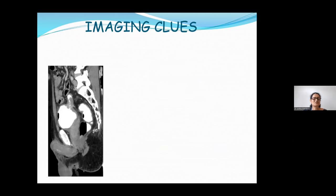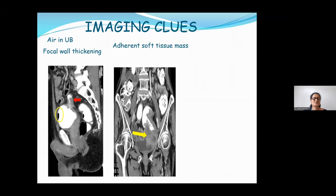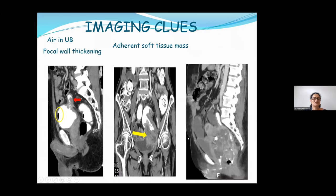Imaging clues on CT: first, air in the urinary bladder without prior instrumentation or infection directly points to fistulation. Second, focal wall thickening of adjacent organs suggests a malignant process with possible fistula. Third, organs adherent to each other or to a large soft tissue mass indicates fistula. Fourth — most important — contrast in an inappropriate location: rectal contrast seen in the vagina, cervix, or perineal soft tissues directly indicates fistula.